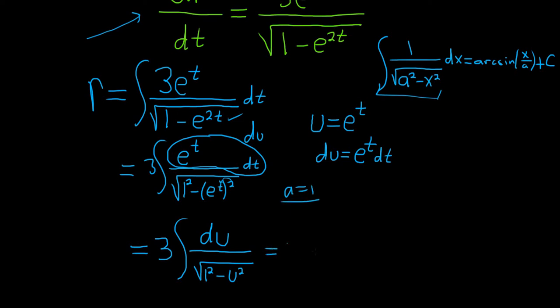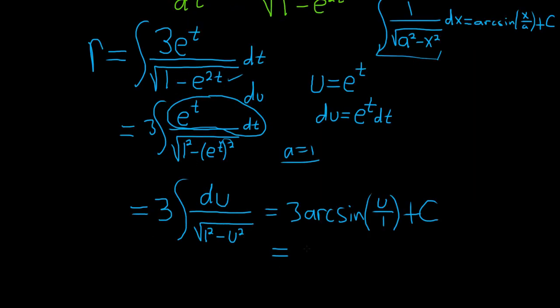So this is equal to, the 3 hangs out. We have arc sine of x over a, so I'll even show this step, u over 1, plus c. You can skip this step, you can go to the answer, I'm just feeling like showing some extra steps today for some reason.